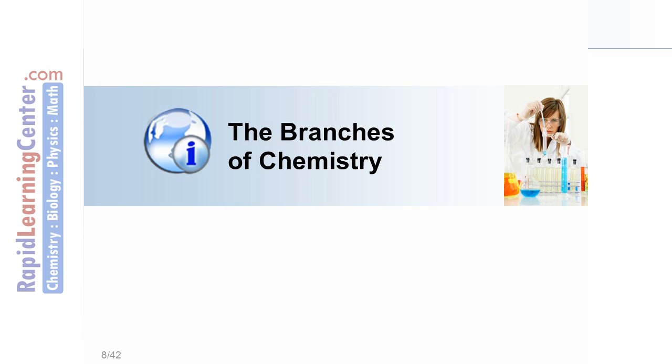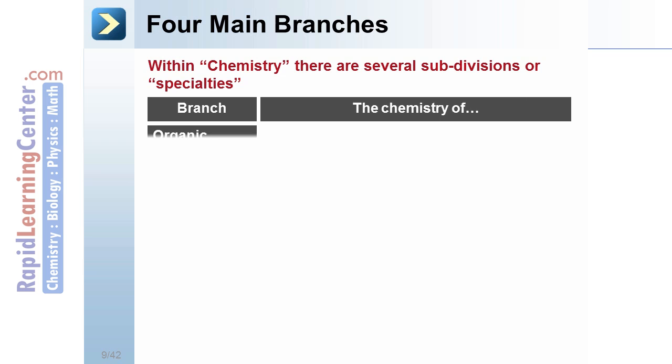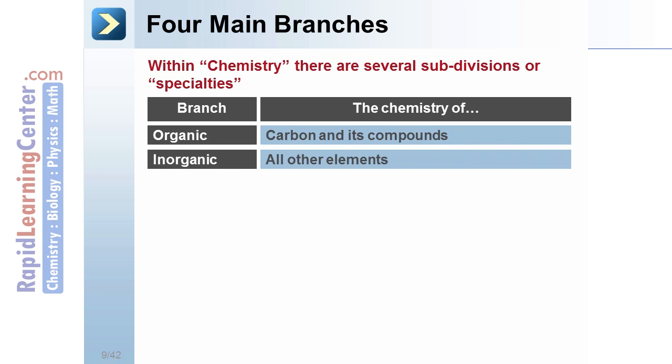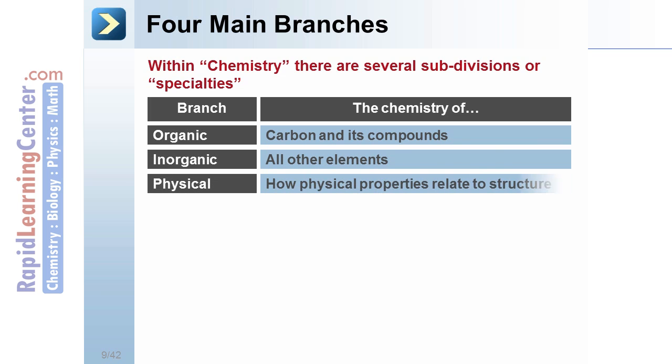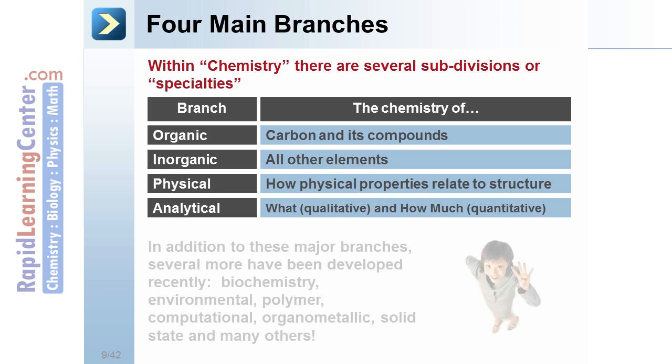There are four main branches of chemistry: organic, which studies carbon and its compounds; inorganic, which focuses on other elements; physical, which is the physical properties relating to the structure; and analytical, what and how much is there. However, many new branches have developed in recent years.